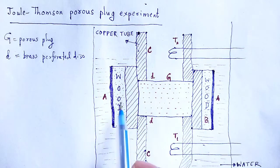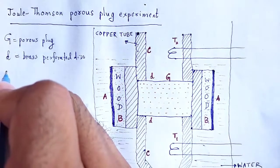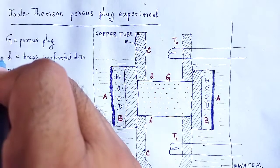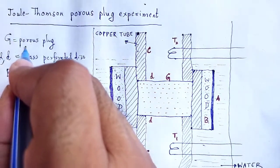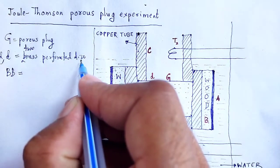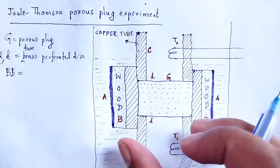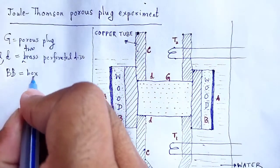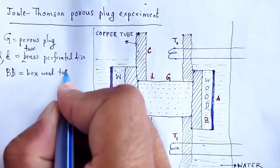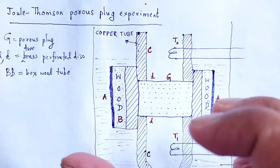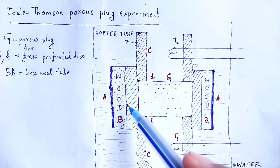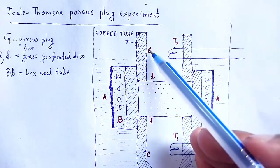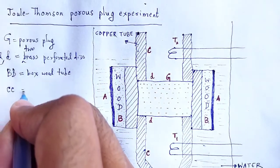That porous plug is enclosed in a boxwood tube BB for the purpose of thermal insulation. DD are the two brass perforated discs, and BB is the boxwood tube used for thermal insulation.